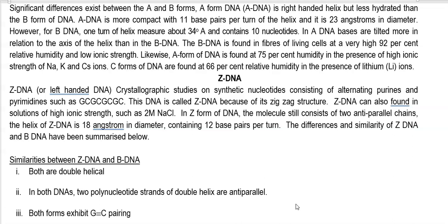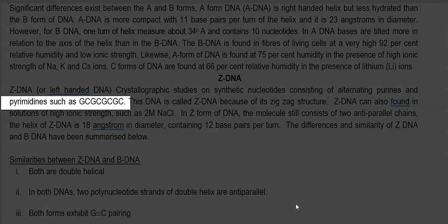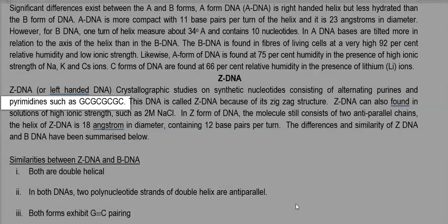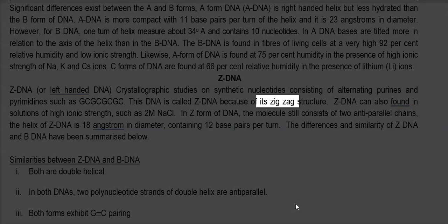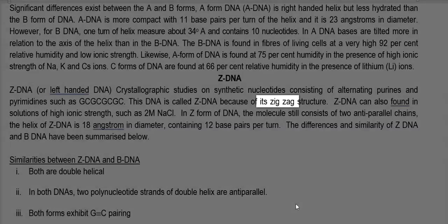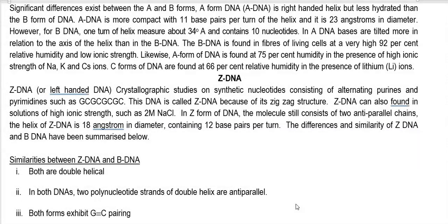Z-DNA is mainly used for certain crystallography studies. Crystallography studies on synthetic nucleotides have identified a unique presence of alternating purines and pyrimidines of GC, GC, GC, GC. This alternating pattern is abundant in the Z form of left-handed DNA. It is also called Z-DNA because its structure is a little bit zigzag compared to the A or B forms.